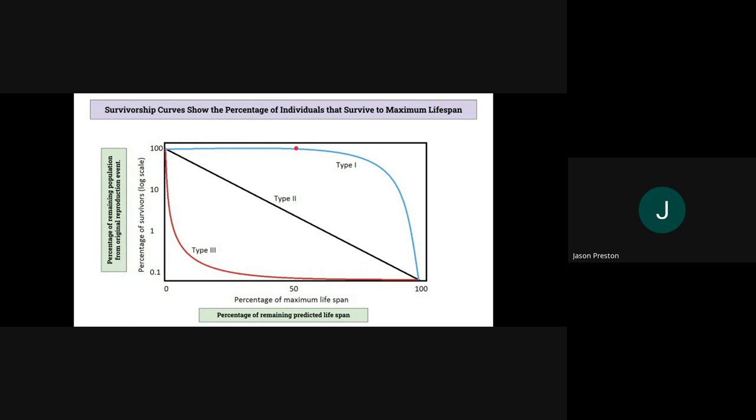In this case, let's say we have 100 humans born in a population. Most of the humans are going to survive till 50% of their lifespan. So let's say the maximum lifespan is 120 for a human. Most people are going to survive until they're 60.